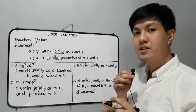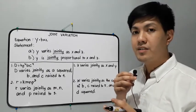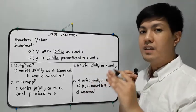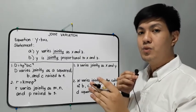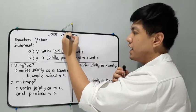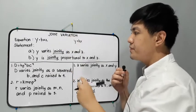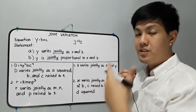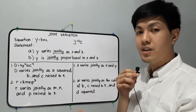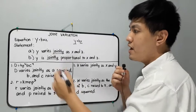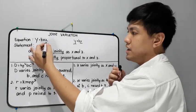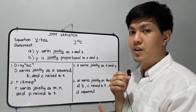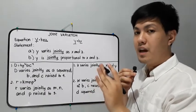The equation for joint variation is y is equal to kxz. If we compare joint variation to direct variation, in direct variation we only have two variables — for example, y is equal to kx, so it only has two variables, y and x. While in joint variation, we can use three or more variables, like y is equal to kxz, which has three variables. That is the difference between joint and direct variation.